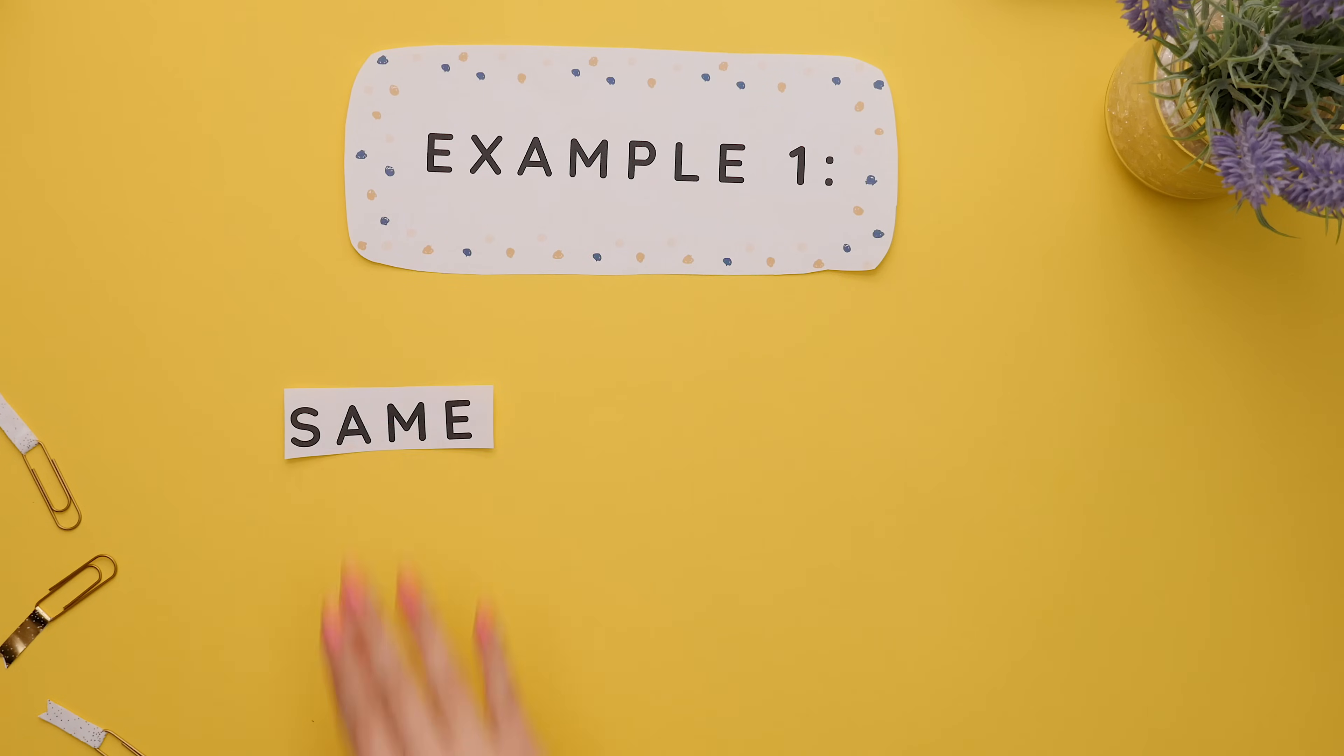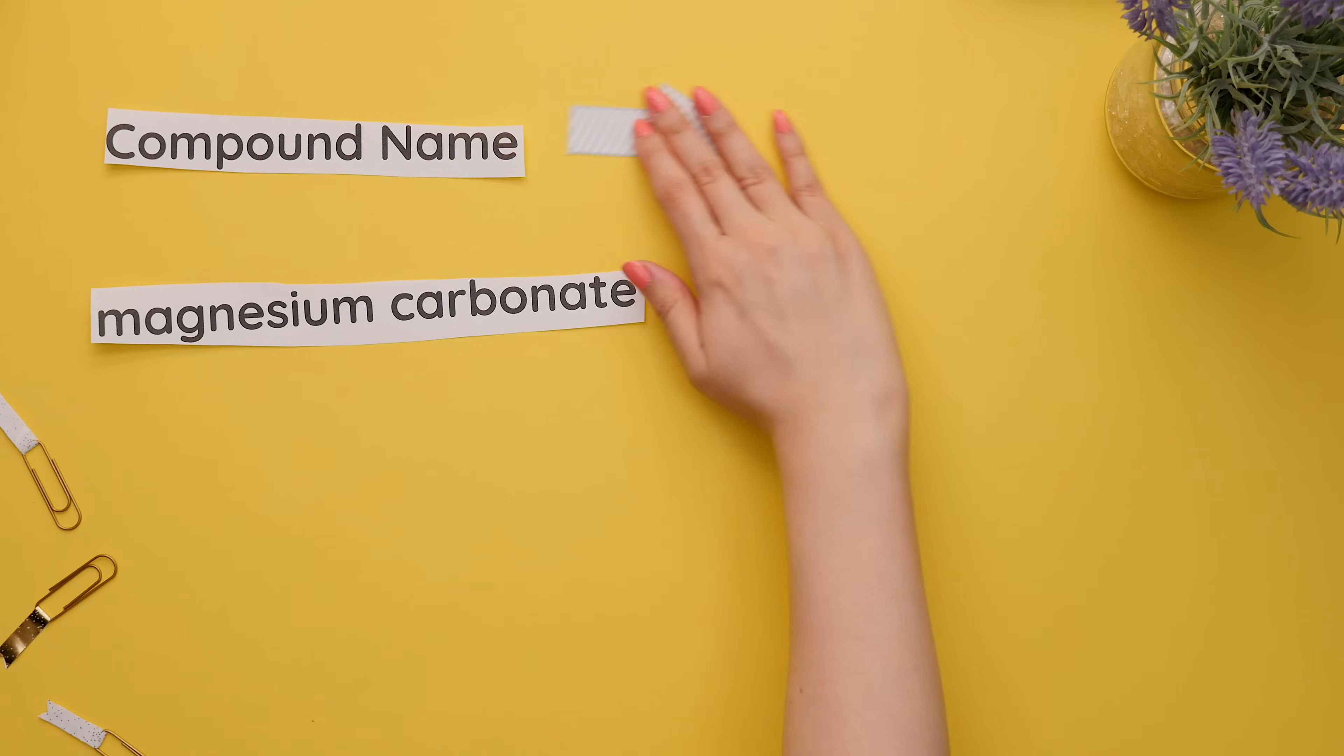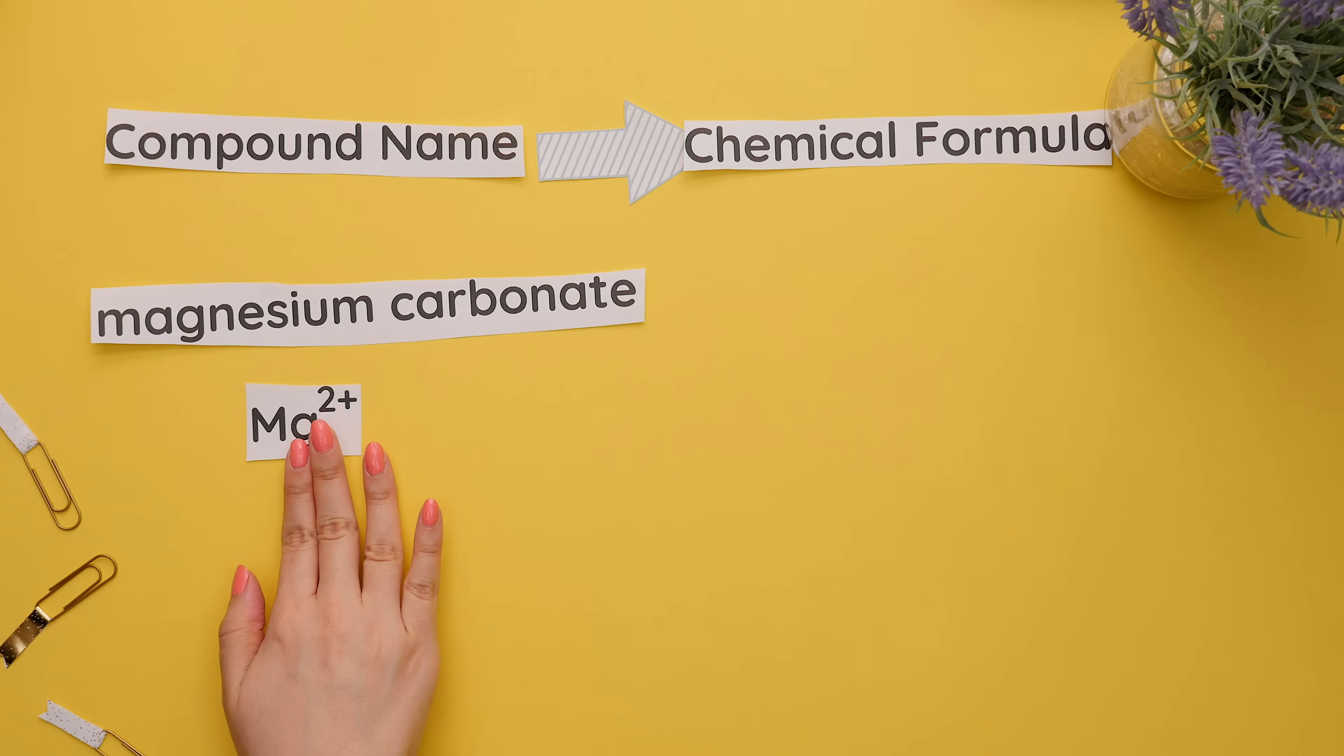Example one, same charges. We are given the compound name of magnesium carbonate and asked to find the chemical formula, so let's first identify the symbol for magnesium and its charge. Magnesium has a charge of 2 plus.